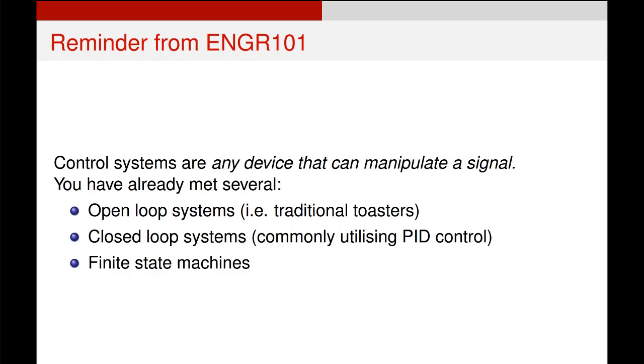Now finite state machines are another kind of control system and we've talked about those in the context of traffic lights and things, but they do also work very well as control systems for a variety of other scenarios as well.